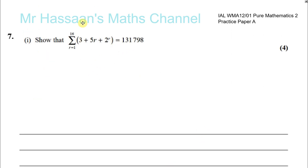Part one says: show that the sum of 3 plus 5R plus 2 to the power of R, when you put in 1, 2, 3, 4, 5, all the way up to 16 instead of R, and you add all of those together, gives you 131,798.